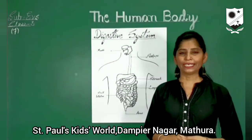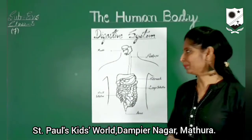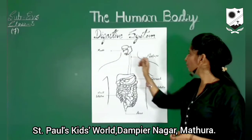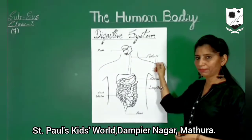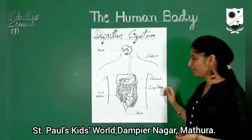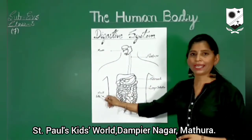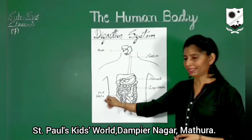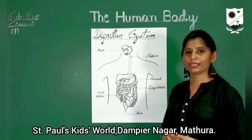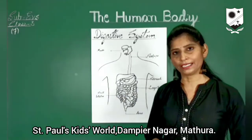Today, we will study about the digestive system. Mouth, food pipe, stomach, large intestine, and small intestine are the main parts of the digestive system.